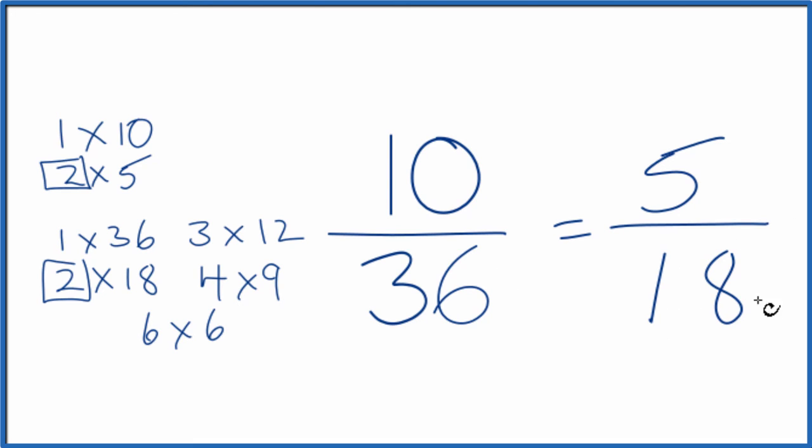We can't simplify this any further. It's in lowest terms. Note that these are equivalent fractions. If you divide 10 by 36 or 5 by 18, you'll get the same decimal number. We've just simplified 10/36 down to 5/18.